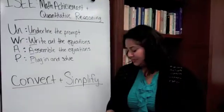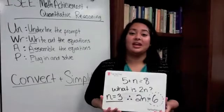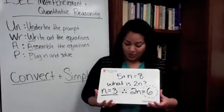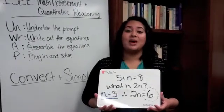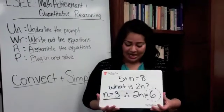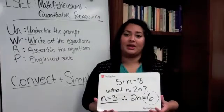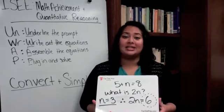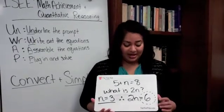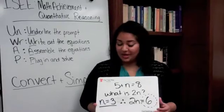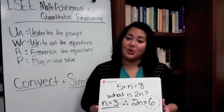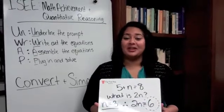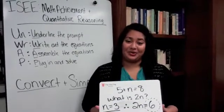Let me give you an example. Here we have a problem: five plus n equals eight. And the question is, what is 2n? So you might say to yourself, wow, this is easy — I just solve it and I find that n equals three, I'm done. But wait, what was the question asking? It was asking, what is 2n? 2n is actually six. And three will also be an answer choice for that question — they're just trying to trip you up. So make sure you don't let that happen to you.